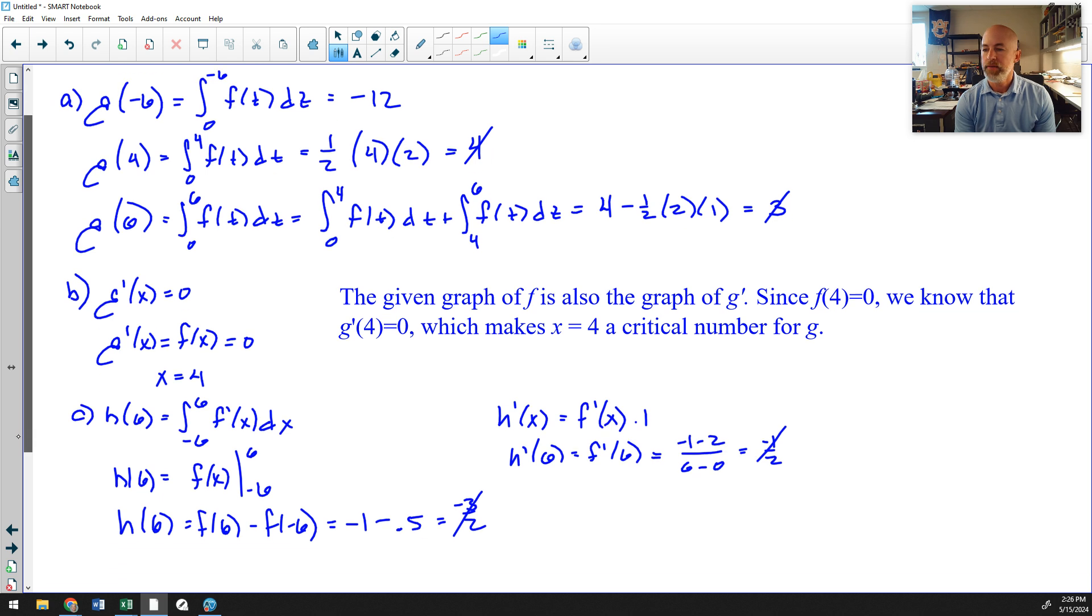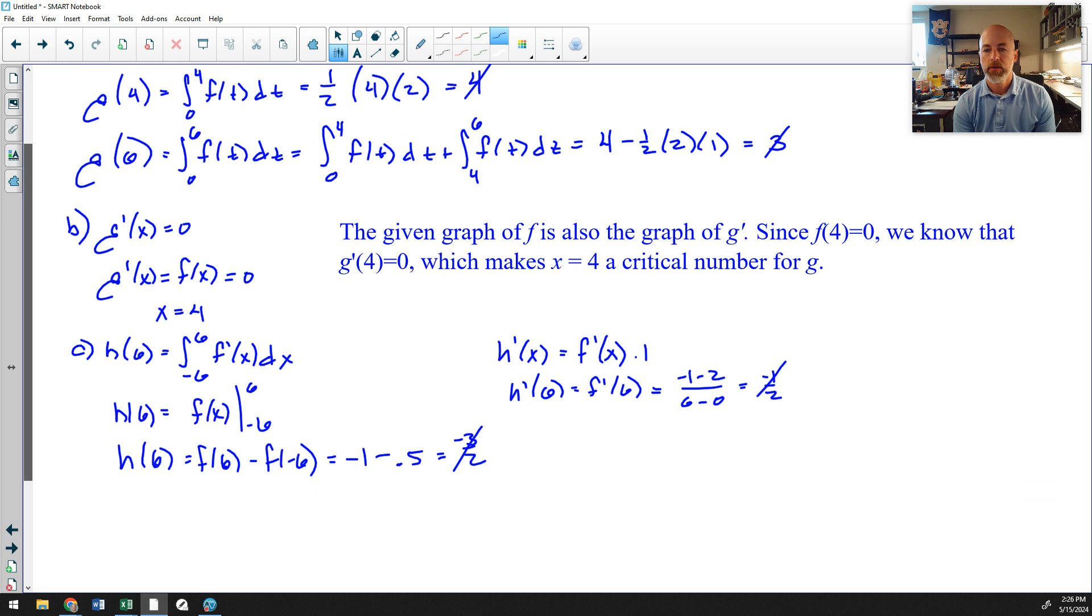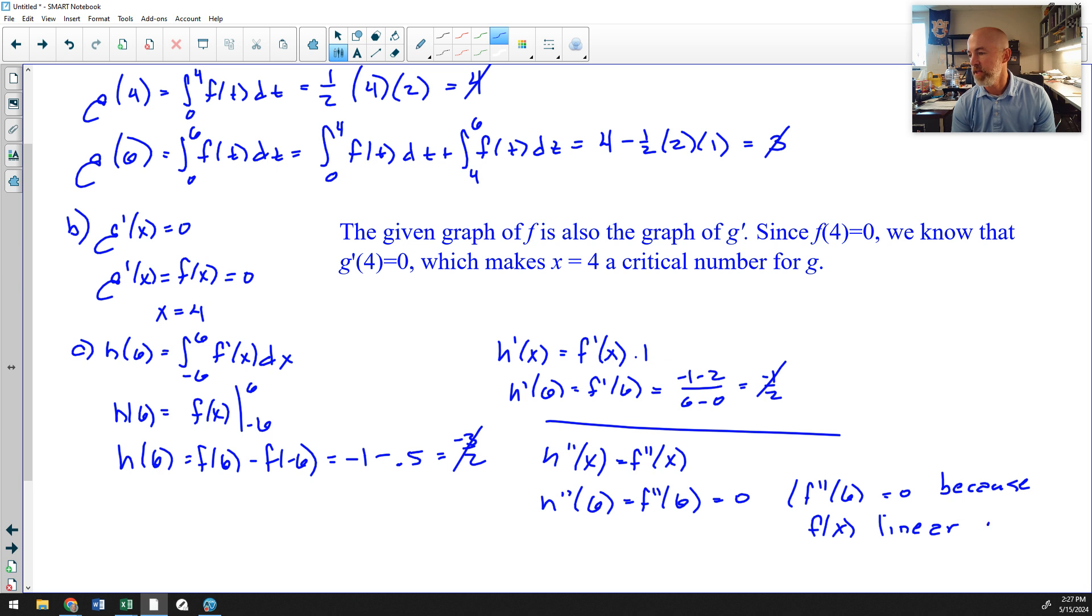And then finally, I'm going to do H double prime. My work is kind of all over the place here. H double prime of X. And if H prime is F prime, H double prime would be F double prime of X. Therefore, H double prime of six is F double prime of six. And at six, F is linear. The second derivative of a linear function would be zero. And I think I may just write that down. F double prime of six equals zero because F is linear. I don't think I need to write this, but I'm just being thorough. F is linear at X equals six.